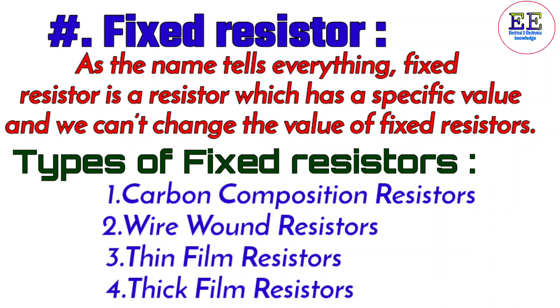Types of fixed resistors: number one, carbon composition resistors; number two, wire wound resistors; number three, thin film resistors; number four, thick film resistors.